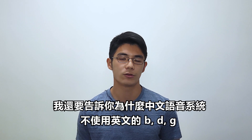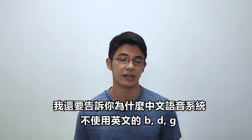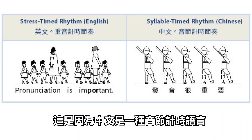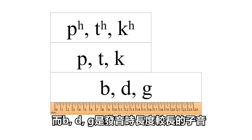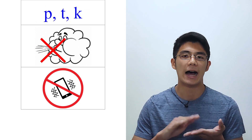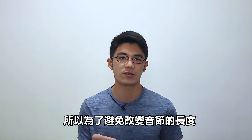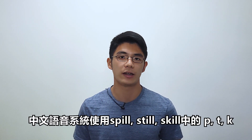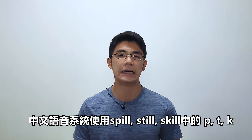Before we end, I'm also going to show you why the Chinese sound system doesn't use the BDG in English. It's because Chinese is a syllable-timed language — each syllable tends to have the same length, and BDG are consonants that are longer in length when pronouncing. So to avoid changing the length of the syllables, the Chinese sound system uses PTK instead of BDG.